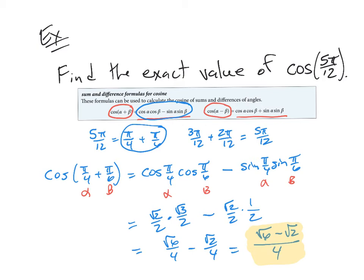So the answer is root 6 minus root 2 over 4. We can't simplify this any further — you just have to leave it like that, even with those radicals. That is one way we use these sum and difference formulas: we can find the value of angles not on the unit circle by breaking them into pieces that involve unit circle values. Let me show you a couple other things we can do with these formulas.